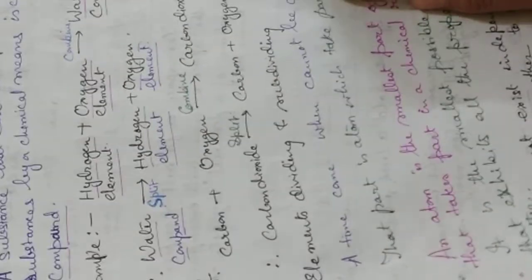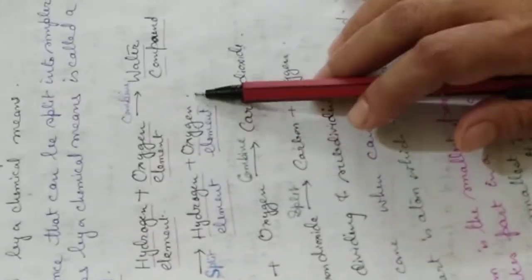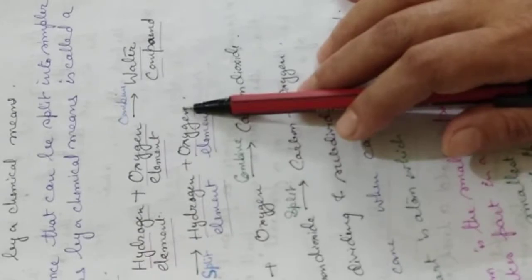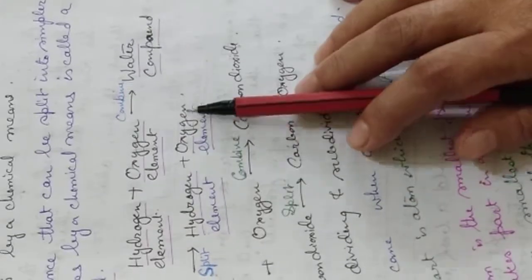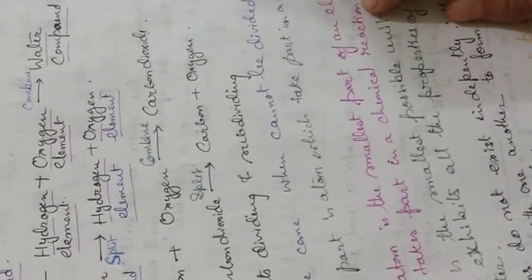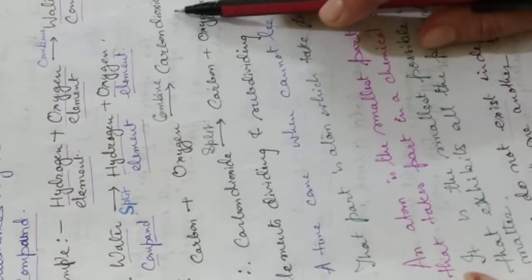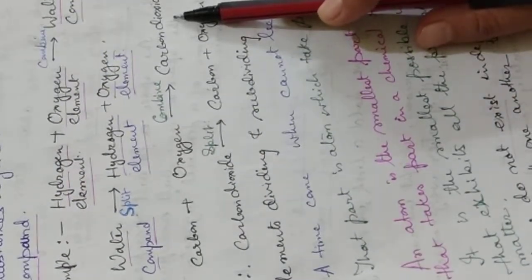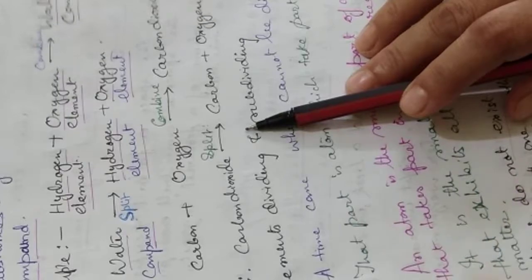For example, hydrogen and oxygen are both elements. When they combine chemically, we form a new substance called water — that is a compound. When we split water by chemical means, the two constituent elements, hydrogen and oxygen, are formed. Again, carbon and oxygen are also elements. When they combine chemically, they form the compound carbon dioxide. Carbon dioxide can be split into carbon and oxygen by chemical means only.